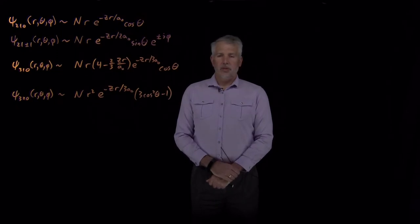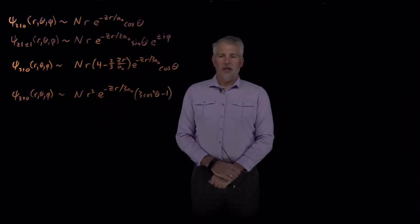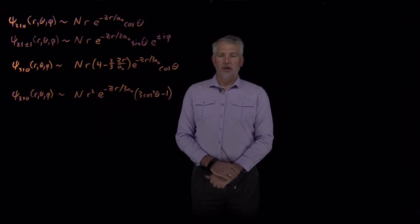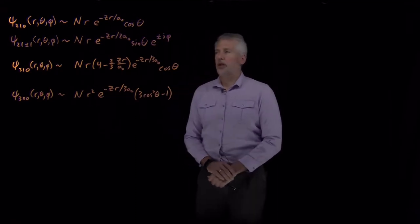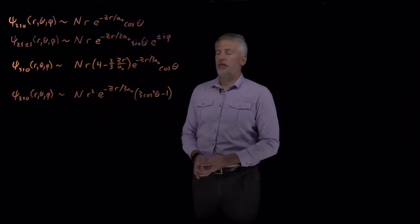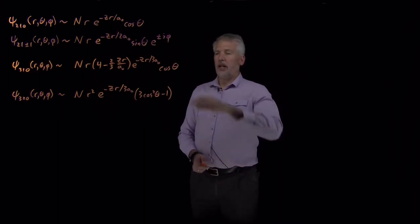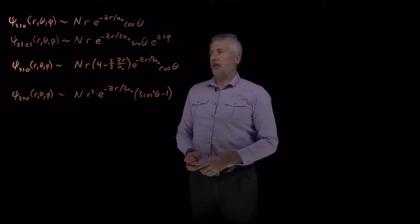We spent a little bit of time understanding what the wave functions mean when they're spherically symmetric. The s orbitals we're familiar with from general chemistry result from the wave functions with l equals 0 and m equals 0, with no angular dependence. Now let's see if we can understand what the wave functions look like when they have some angular dependence.